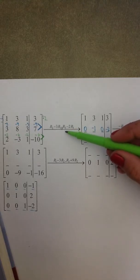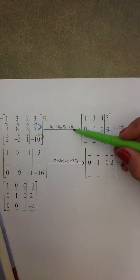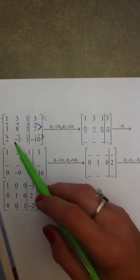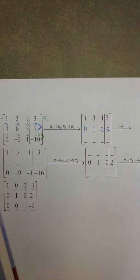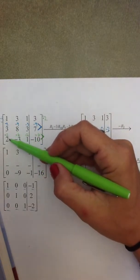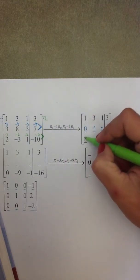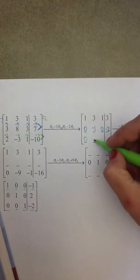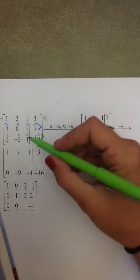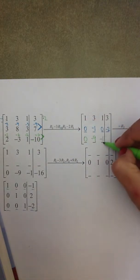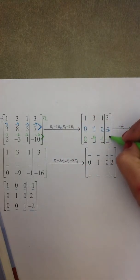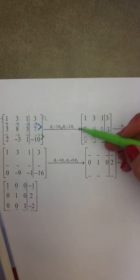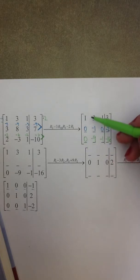Row three is the changing row; it gets changed by adding negative two times row one. Adding the pairs: negative two and two is zero, negative six minus three is negative nine, negative two plus one is negative one, and negative six plus ten is negative sixteen. My first column is done — I have my leading one and the rest of the entries are zeros.